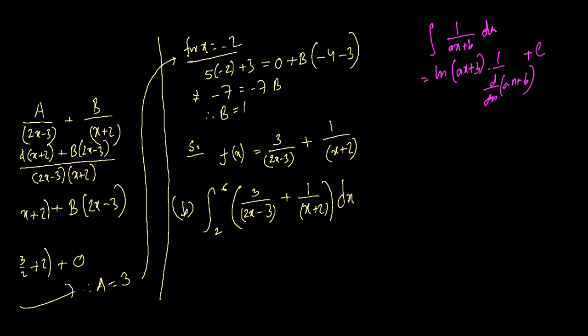For this particular sum, so what we need here, the 3 would be here, constant. So 1/(2x-3) is ln(2x-3), divided by the chain rule, the derivative of 2x-3 is 2, plus ln(x+2), the derivative of x+2 is 1, and the limit is 2 to 6. So that's how we do it.